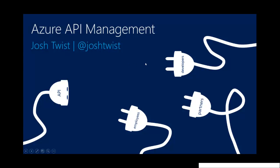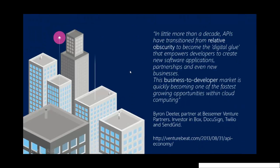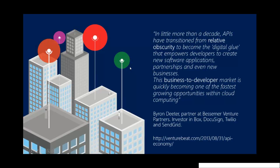I want to talk a little bit about API management at a high level. When I'm presenting on this, I usually like to show this quote, and this quote is from a guy called Byron Dieter. He's a partner at Bessemer Ventures. They invest in a lot of these very forward, progressive businesses like Twilio and DocuSign and Box and SendGrid, and they're all good examples of businesses that are front and foremost in the API economy.